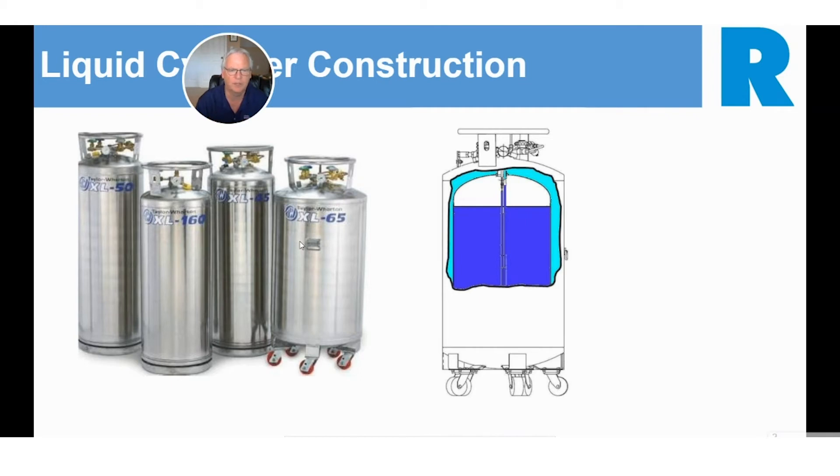The liquid normally is going to lose one to 2% a day in a liquid cylinder. And without the vacuum, it's going to lose its contents within a day. It's just going to be boiling off. It's almost like pouring liquid nitrogen or oxygen or argon into a bucket and letting it sit there and boil off. It dissipates pretty quickly.